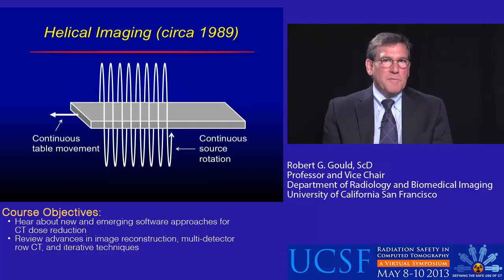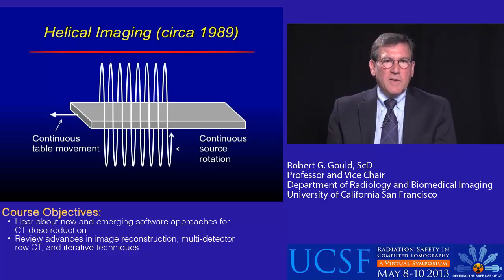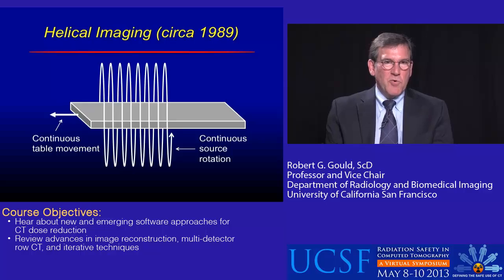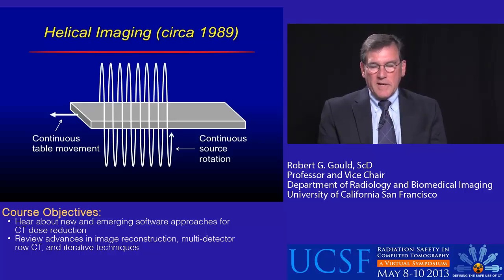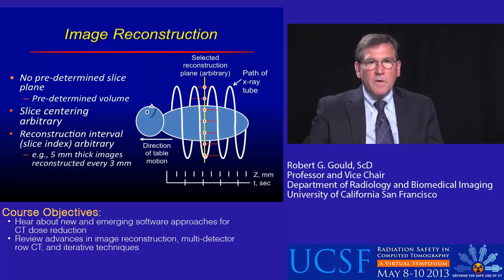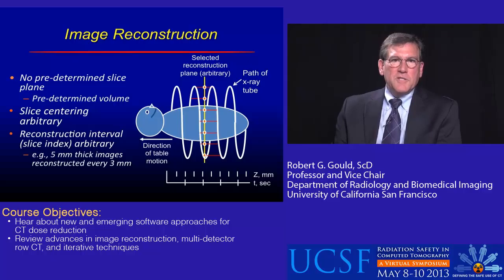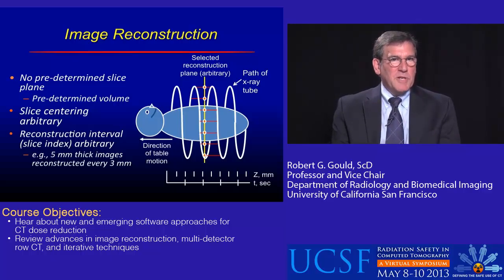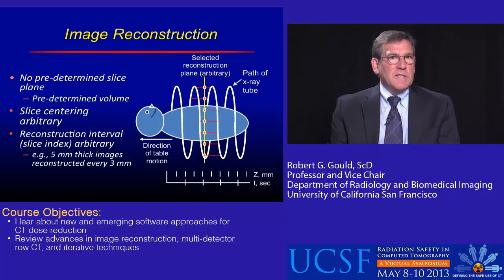Then along came helical imaging around 1990, where the tube was continuously moving. The detectors were continuously moving while the table was translated through. This means that the 0 and 180 degrees are no longer identical because the object moved.